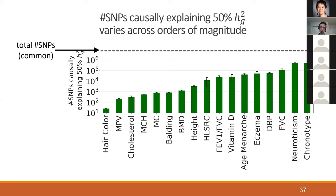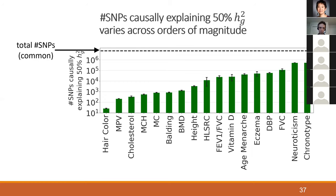We asked: how many SNPs does it take to explain 50 percent of heritability h²_g across different traits? The answer varies widely across orders of magnitude — from fewer than 100 for hair color all the way to over half a million for chronotype, which is whether you're a morning person. This gives insight into which traits have more complex genetic architectures than others.